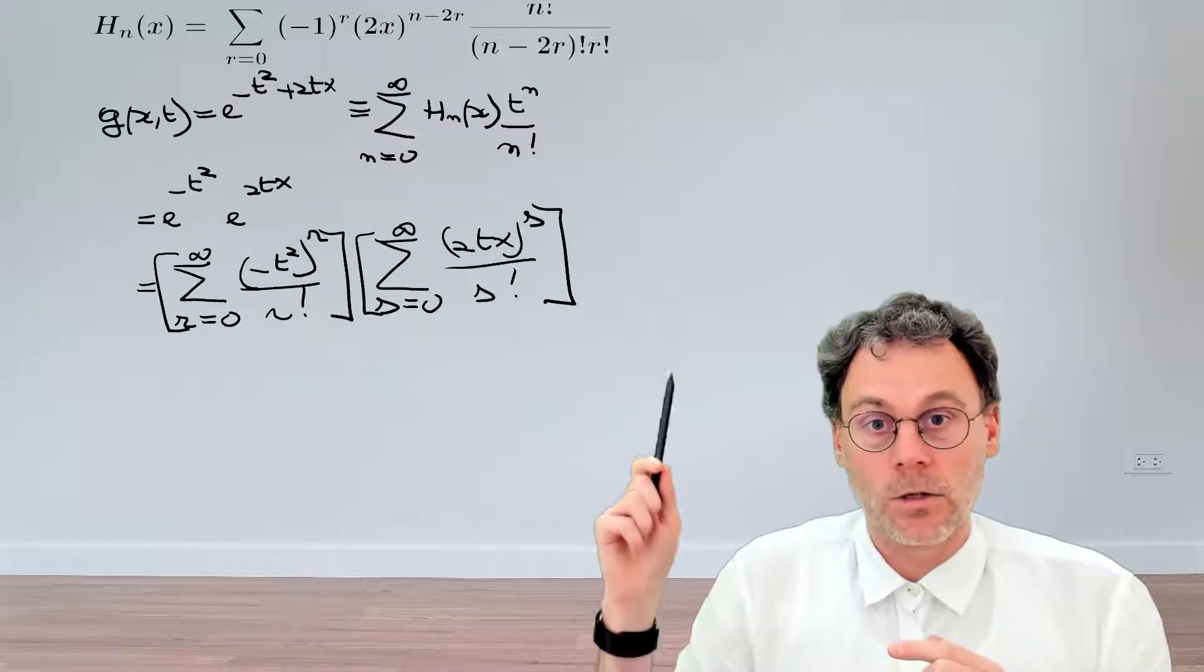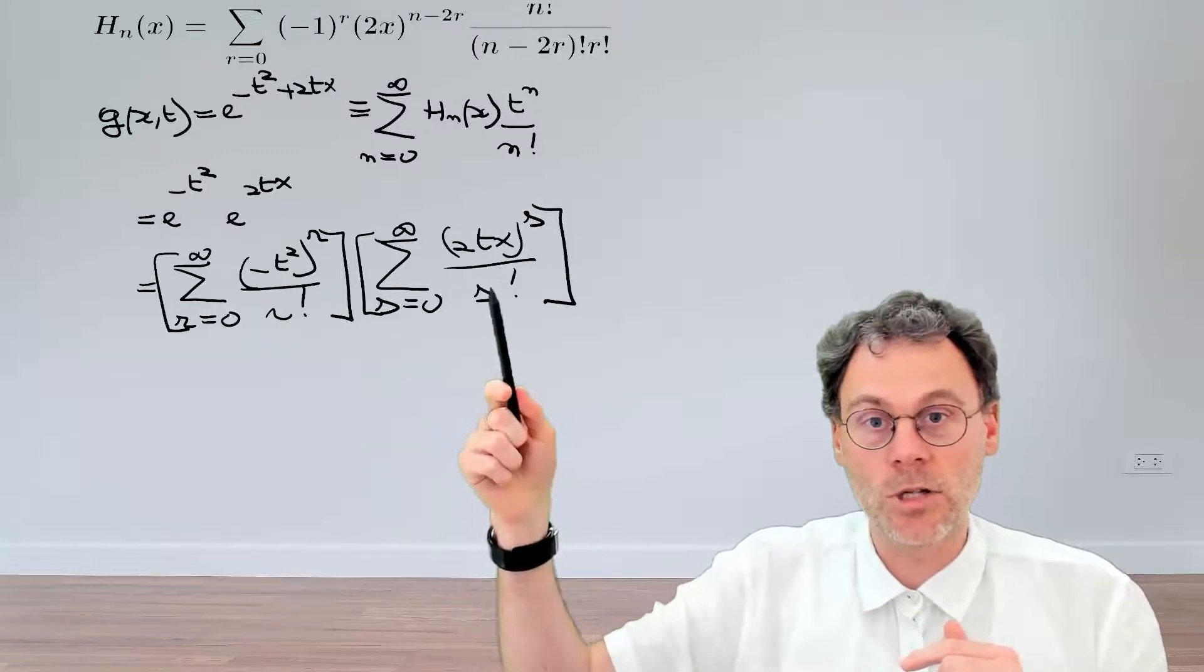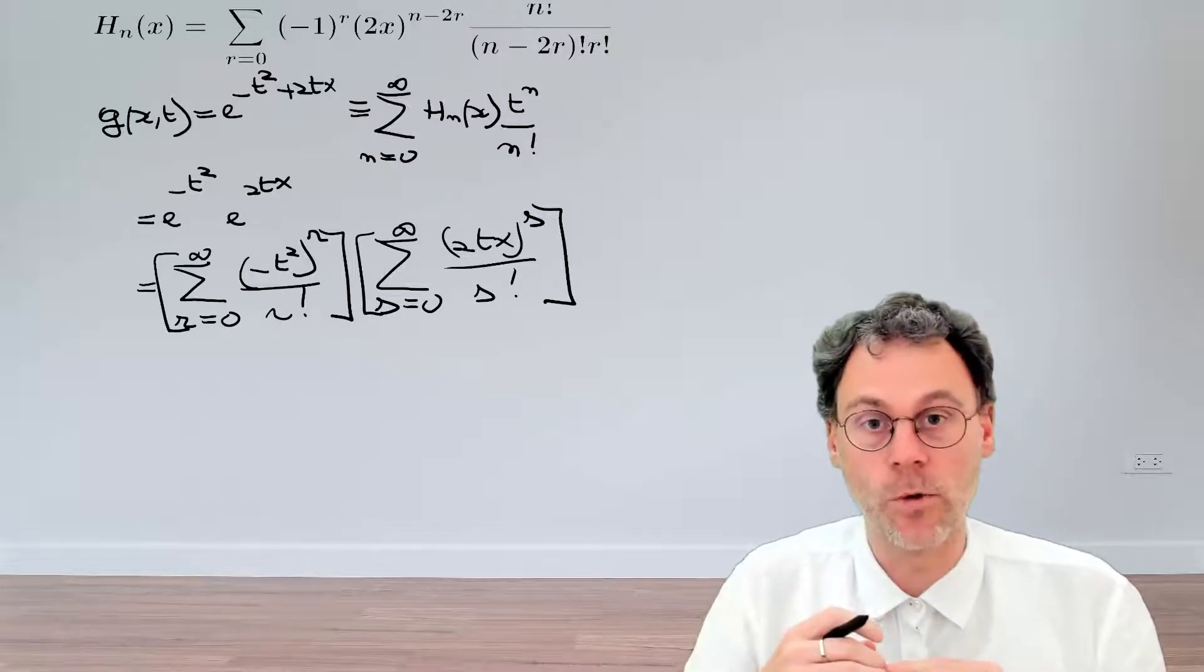Okay. So now that we've avoided that pitfall, let's just rearrange this such that we can write it in a form where we have an explicit formula for the coefficient of t to the power of n.